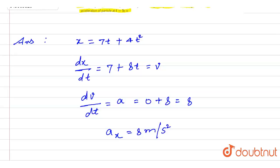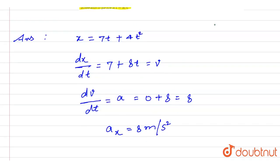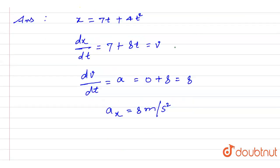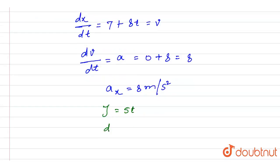And also, we have given y coordinate is equal to 5t. Let's solve it. y is equal to 5t. When we will differentiate with respect to time, we will get velocity in y direction is equal to 5.